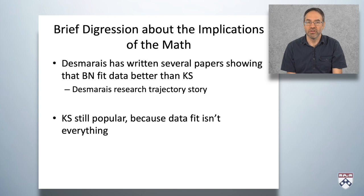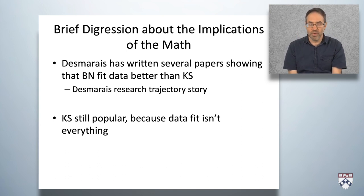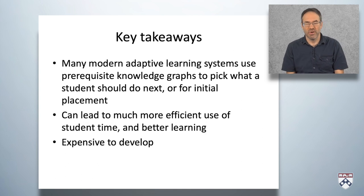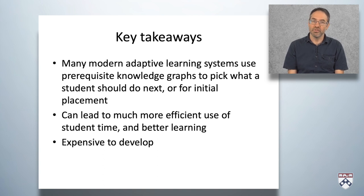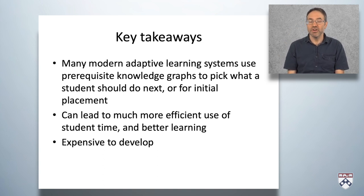Desmarais is a good scientist. Be a good scientist and a good practitioner yourselves — be open to finding out you're wrong. Knowledge spaces are still popular because data fit isn't everything, and there are many cases where the assumptions and flaws of knowledge spaces are a better fit than those of Bayesian networks, which is why they're still used. To wrap up: many modern adaptive learning systems use prerequisite knowledge graphs to pick what a student should do next or for initial placement, leading to much more efficient use of student time and better learning — but they're expensive to develop, and the lack of open knowledge graphs means they don't get used nearly as much as would be ideal.